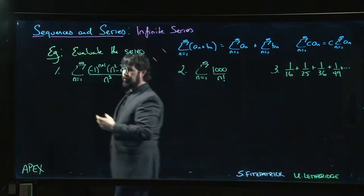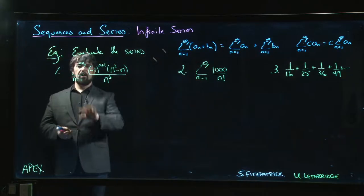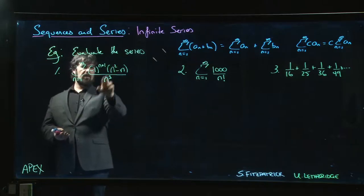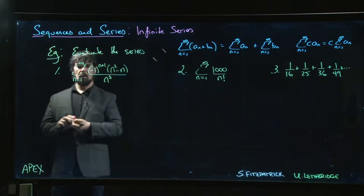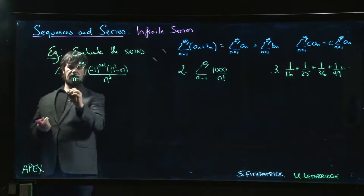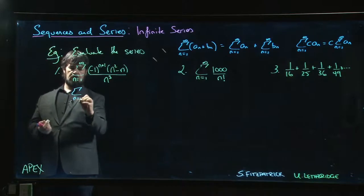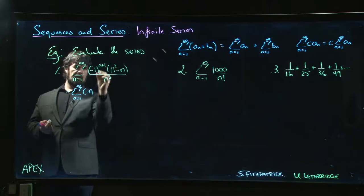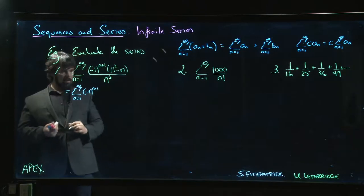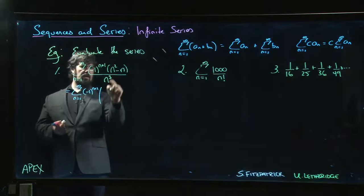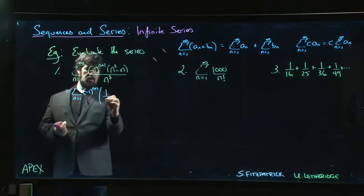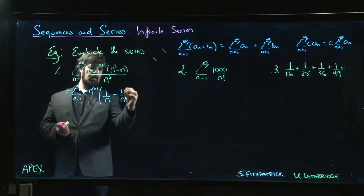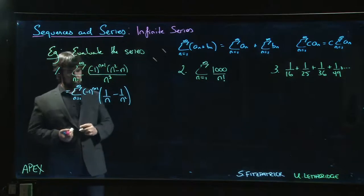Let's come to something like this: sum from n=1 to infinity of (-1)^n times (n^2 - n)/n^3. How are we going to deal with it? Well, let's try manipulating a little bit first. Sum from n=1 to infinity, let's leave that (-1)^(n+1) out front, and notice that we can divide each of these individually by n^3. So n^2/n^3 is just 1/n, and n/n^3 is 1/n^2.